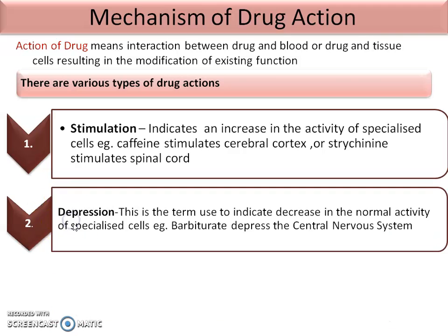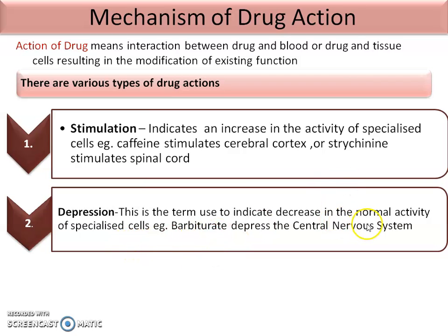The second type is depression. This term is used to indicate the decrease in the normal activity of the specialized cells. In depression, activity is decreased in the specialized cells. Example: barbiturates depress the central nervous system. So in stimulation activity increases, while in depression activity decreases — both applying to specialized cells.